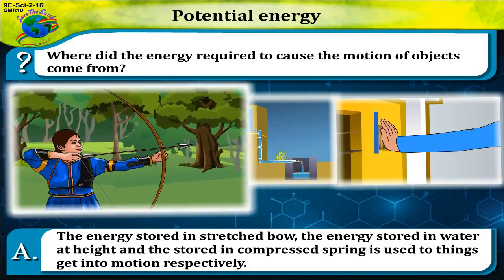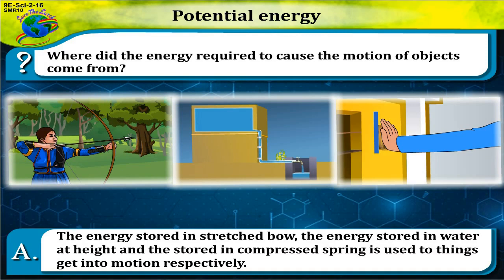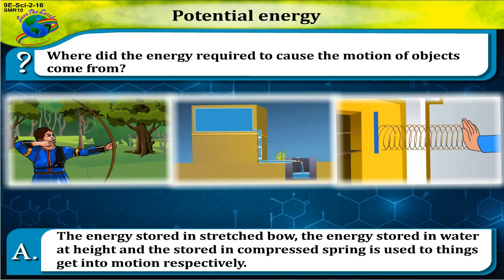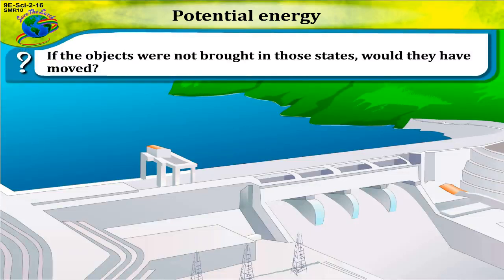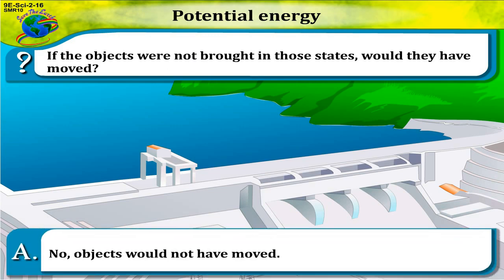The energy stored in the stretched bow, the energy stored in water at height, and the energy stored in the compressed spring is used to get things into motion respectively. If the objects were not brought into those states, would they have moved? No.